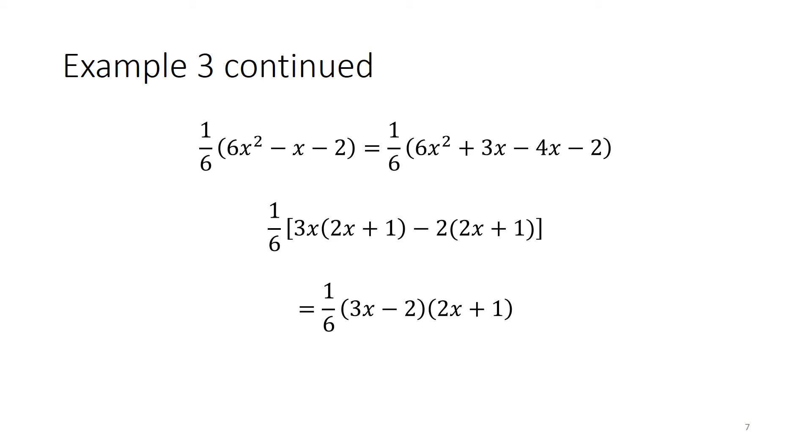Now that we have our integers, we may rewrite the middle term as 3x minus 4x, and that is what we've done here in the first step. Upon completing this, we can see that in the first pair, we can factor out a 3x, which leaves us with quantity 2x plus 1.